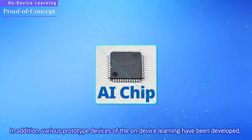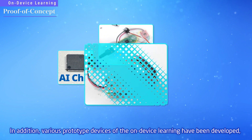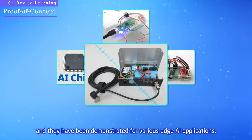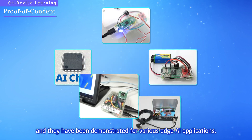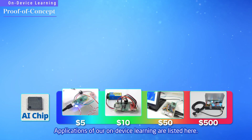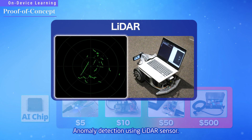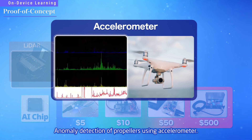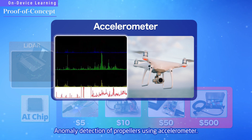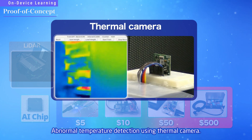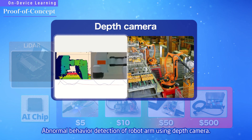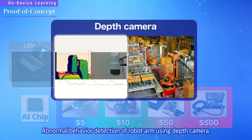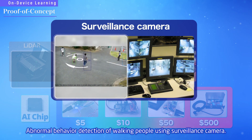Various prototype devices of the on-device learning have been developed and demonstrated for various Edge AI applications. Applications include anomaly detection using LiDAR sensor, anomaly detection of propellers using accelerometer, abnormal temperature detection using thermal camera, abnormal behavior detection of a robot arm using depth camera, and abnormal behavior detection of walking people using surveillance camera.